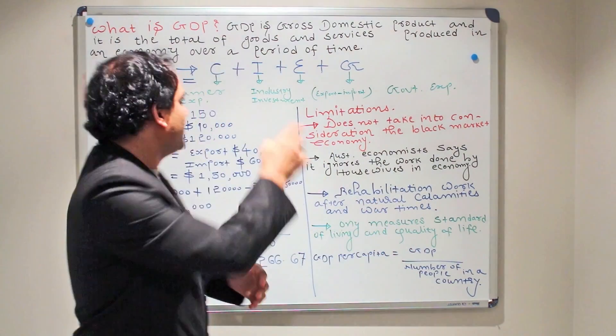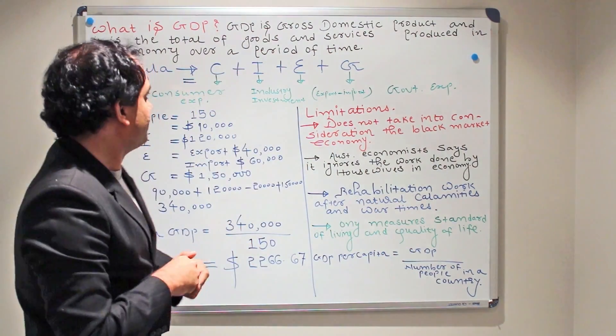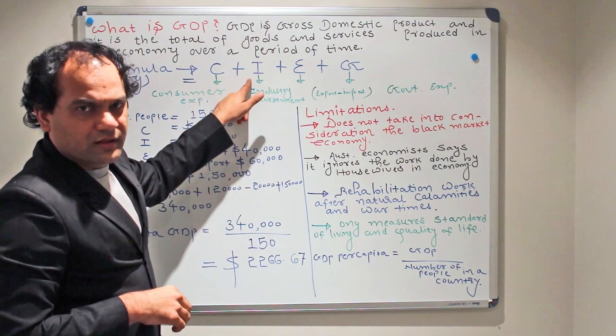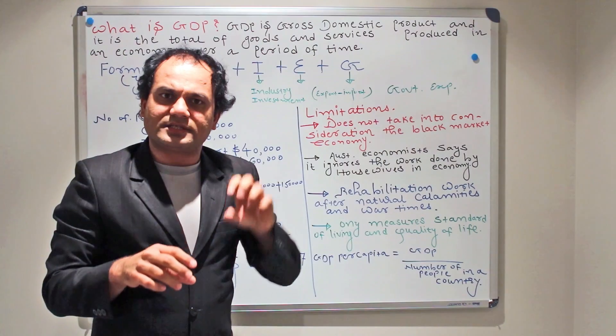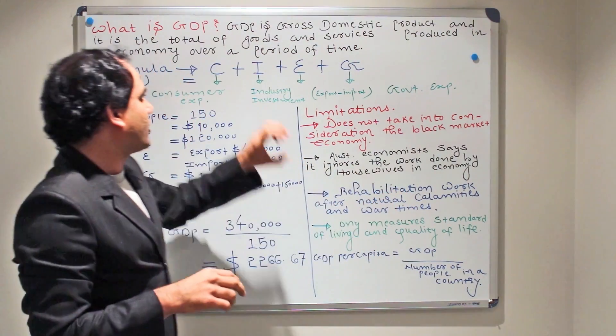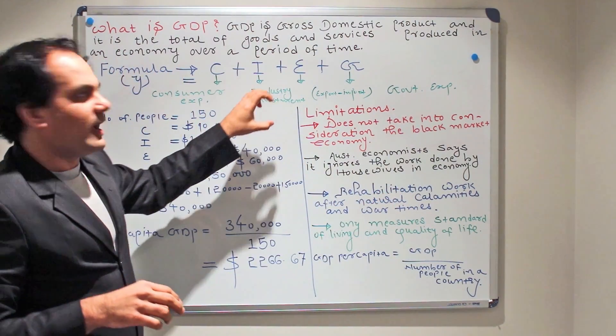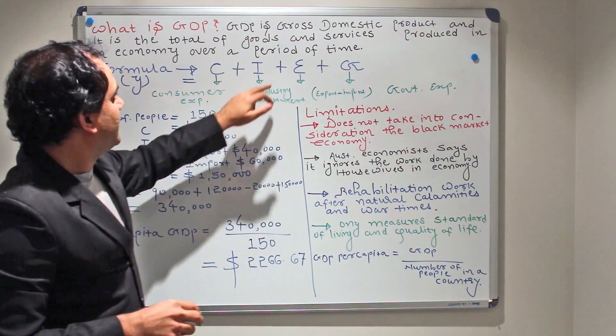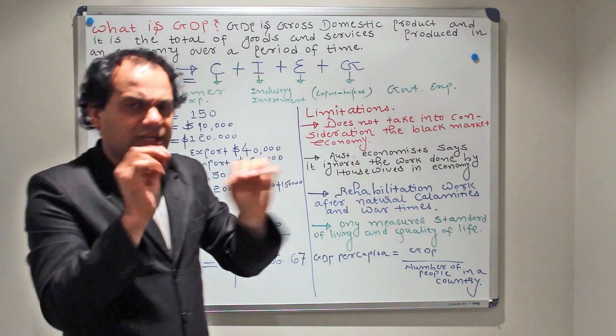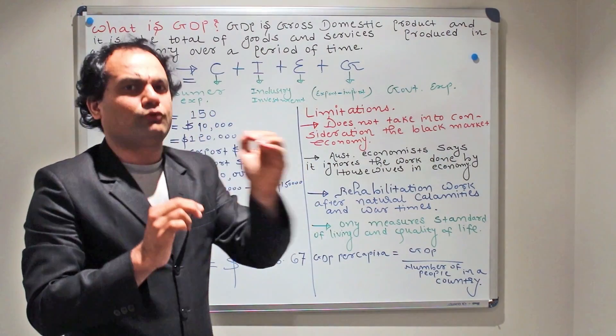Then comes I. I stands for industry investment. Whatever investment has taken place in an economy will be recorded here and that will be calculated with the term I.